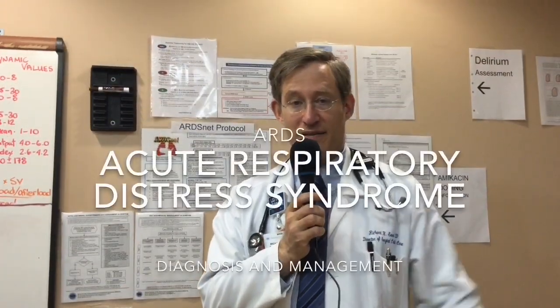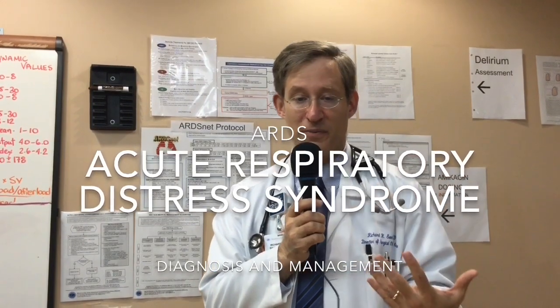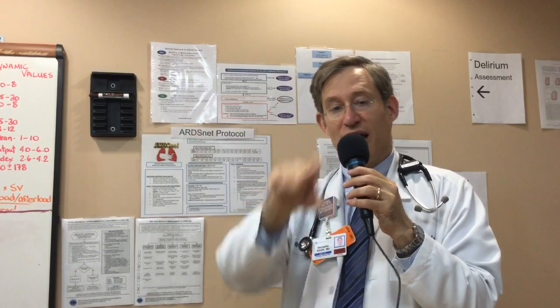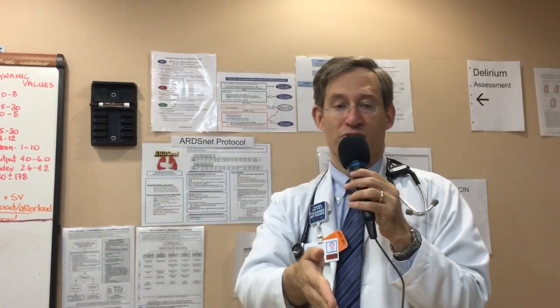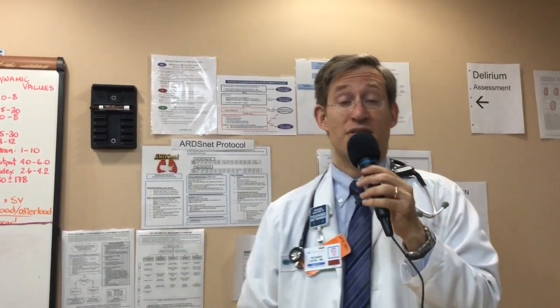Our next topic is ARDS — acute respiratory distress syndrome. It's very important that I share how intensivists think about this disease entity. The definition requires the correct clinical scenario — usually direct or indirect lung injury — with bilateral, usually asymmetric infiltrates and no obvious evidence of left atrial hypertension, which does not mandate a pulmonary artery catheter. Using the Berlin definitions, there are criteria for hypoxemia based on the PaO2/FiO2 ratio: 300 to 200 is mild ARDS, 200 to 100 is moderate ARDS, and less than 100 is severe ARDS.